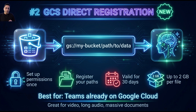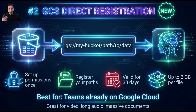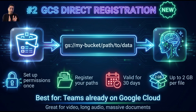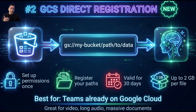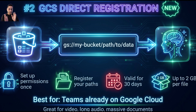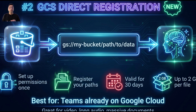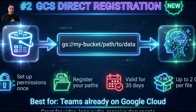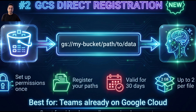Another update is Google Cloud Storage direct registration. If your files are already in GCS, you can register them straight from your bucket. You set up the permission once, register your path, and it is going to be valid for 30 days. The limit is 2 GB per file, which is great for video, long audio, or massive documents.